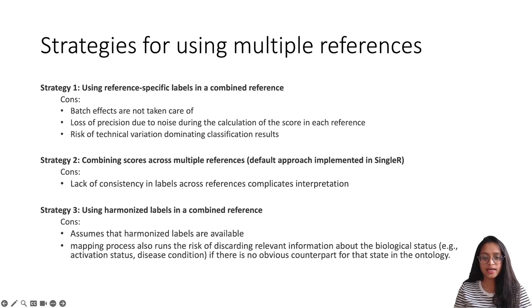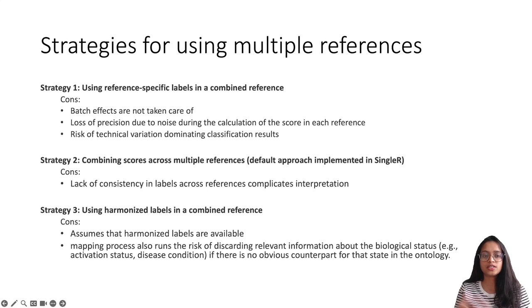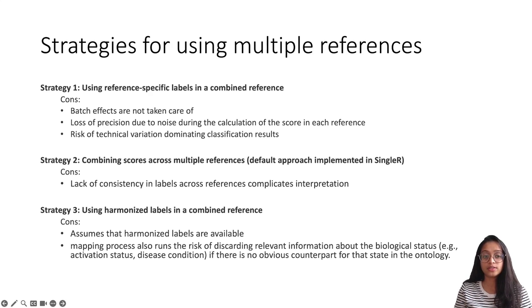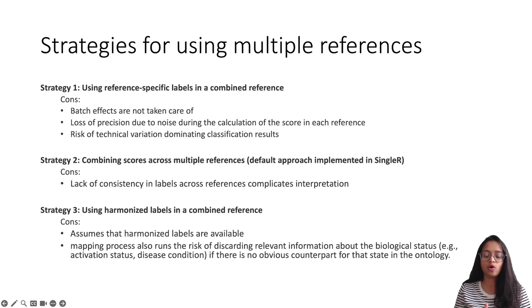This strategy is useful when the difference between both your reference datasets is important. For example, reference dataset X could be derived from healthy patients or healthy tissues and reference dataset Y from tumor patients or tumor tissues. Such a combination can be used to annotate datasets where your query dataset contains both healthy and diseased cells. The problem inherent to this approach is that there is no way to easily distinguish between uninteresting batch effects and genuine biological differences between your reference datasets.